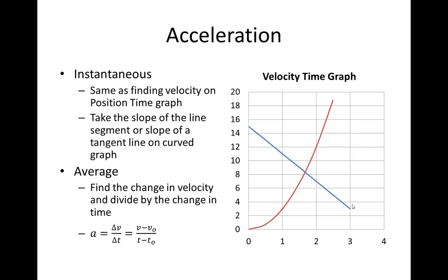Here we have two graphs: one is a constant acceleration, and the other is a changing acceleration. For the first one, I'm going to take the slope of the blue line segment, which gives me an acceleration of negative 4 meters per second squared. On the curved section, I take a tangent line to a given point — at about 0.5 seconds. Finding two points on there: one is (1, 2) and the other is about (0.4, 1), giving an acceleration at that point of plus 3.33 meters per second squared, assuming units of meters per second and seconds.